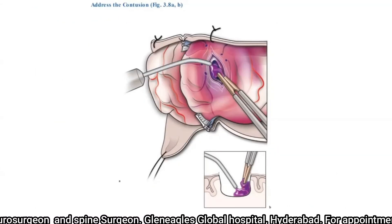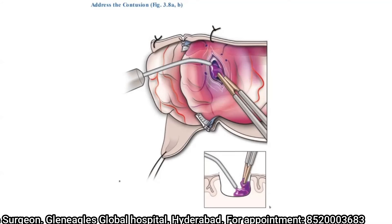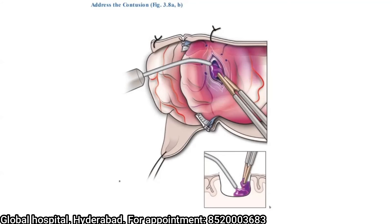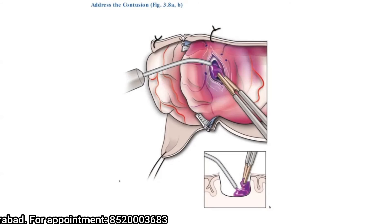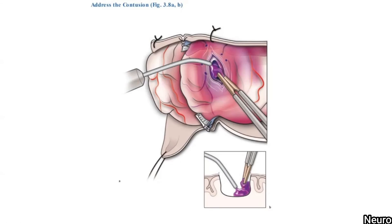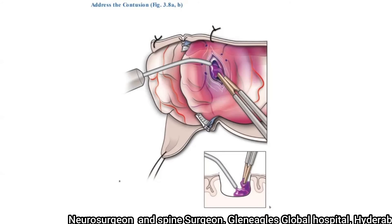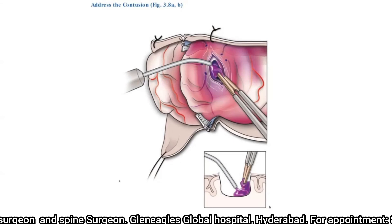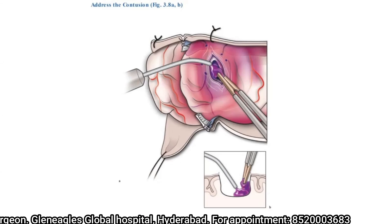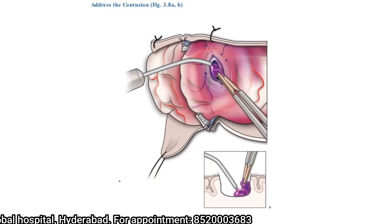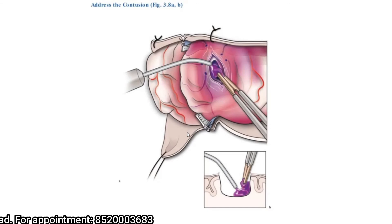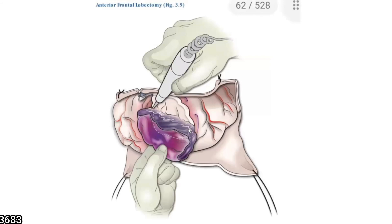Evacuation of the contusion is similar to the technique described in the previous session — viewers are encouraged to review that session on the YouTube channel. The steps involve: identification of the contusion, cauterization of the superficial pial surface, working in the sub-pial plane to reach the contusion, then evacuating the liquefied components of the contusion, and achieving hemostasis.